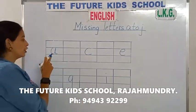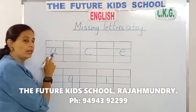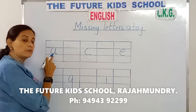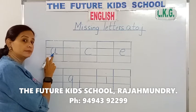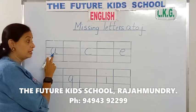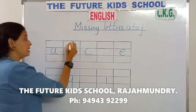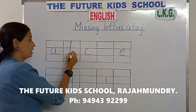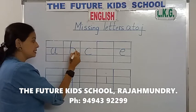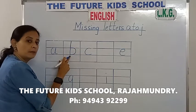We've got the letter A here children. Small letter A. What letter comes after A? Yes, letter B. Small letter B. So we need to fill in the missing letter. The missing letter is small letter B.